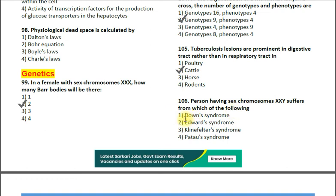Question number 106: Persons having sex chromosomes XXY suffer from which of the following? Options are: 1. Down syndrome; 2. Edward syndrome; 3. Klinefelter syndrome; 4. Turner syndrome. The correct answer is option three — Klinefelter syndrome. Since there is a Y chromosome, this person is male, but these males have delayed development, small penis, underdeveloped testicles, and are infertile.